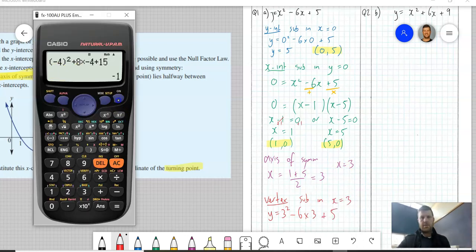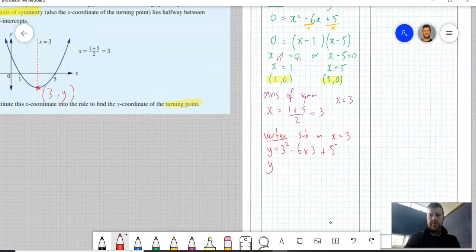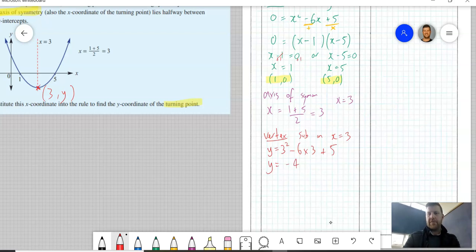So that would be, 3 squared is 9 minus 18 plus 5, which makes it minus 9 plus 5, which is minus 4. Good, minus 4. We don't even need a calculator, so y equals minus 4, giving me the coordinates (3, minus 4). Good, (3, minus 4) for our vertex.